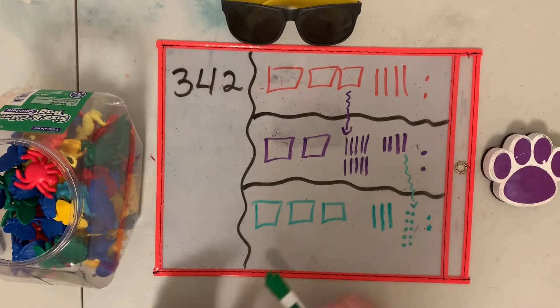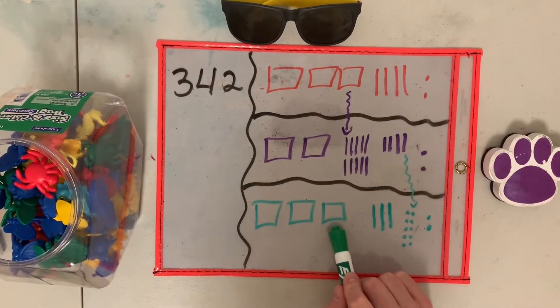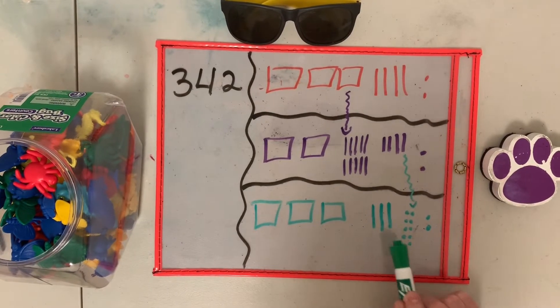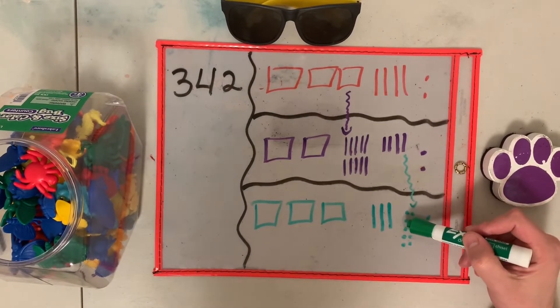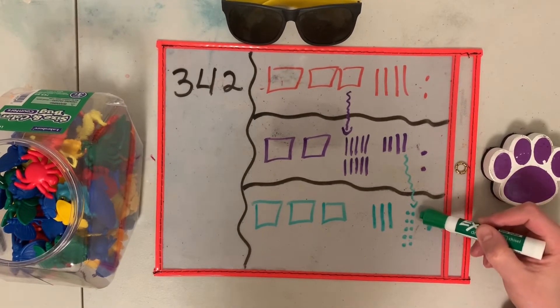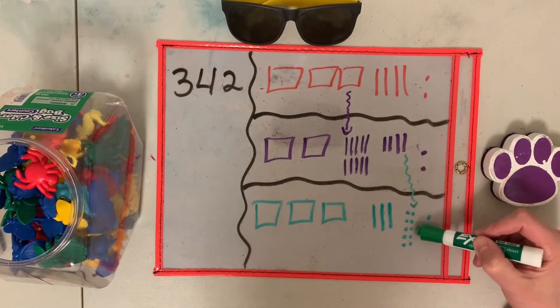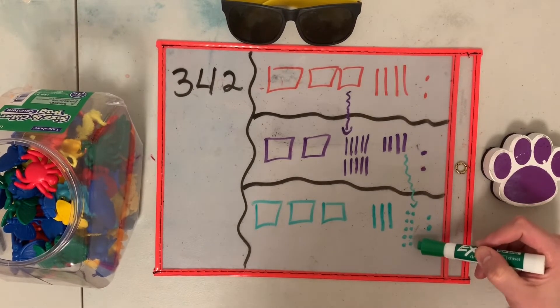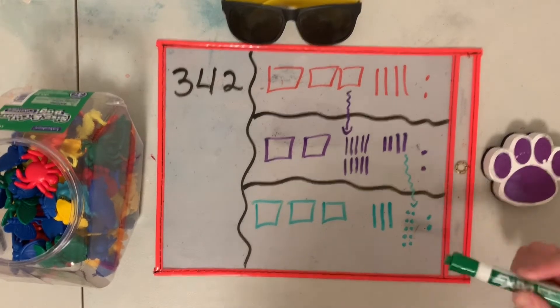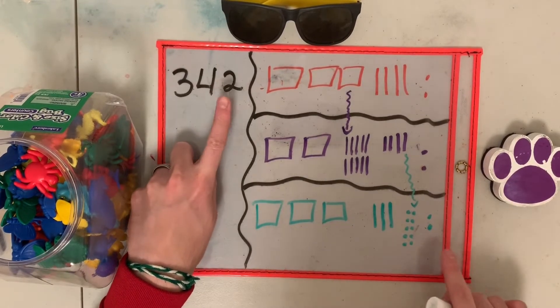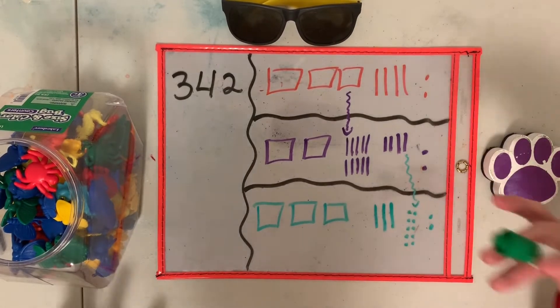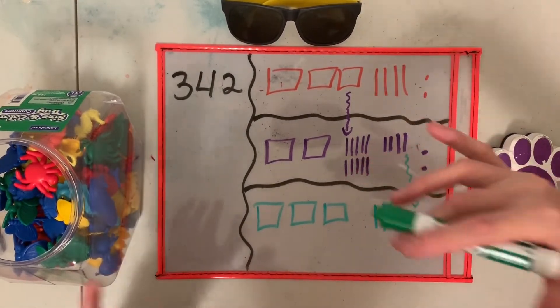Vamos a contar ahora. 100, 200, 300, 310, 320, 330, 331, 332, 333, 334, 335, 336, 337, 338, 339, 340, 341, 342. Todos estos son los mismos números. They are the same number, but we show them in different ways.